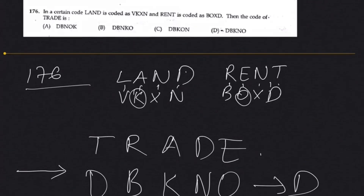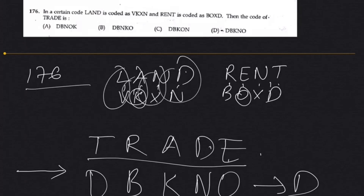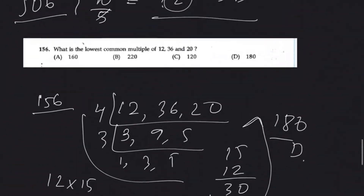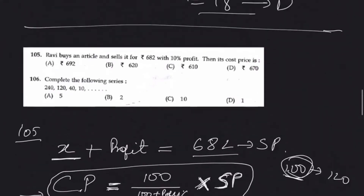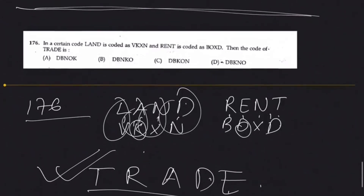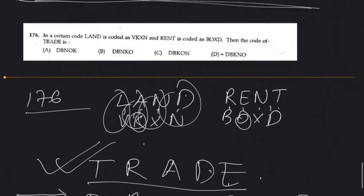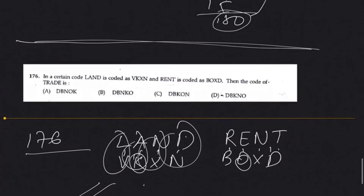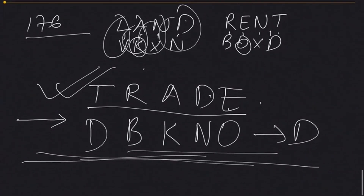This is an easy question, but you have to find the relations between letters in coding questions where the code isn't directly given. Let me stop this second video here. In the third video we will try to solve the remaining questions from the question paper. Thank you for watching. If you have any thoughts or confusion, please comment.